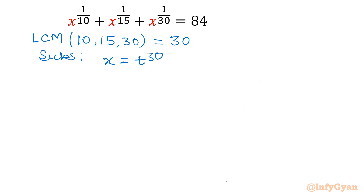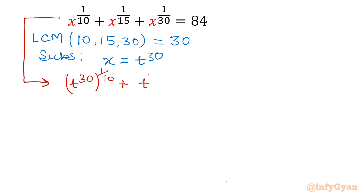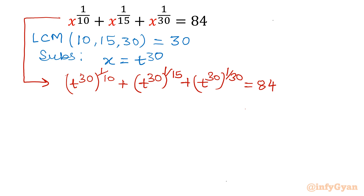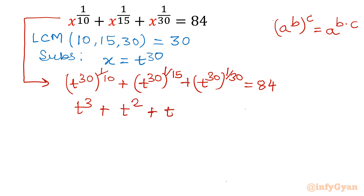Now substitute the value. I will write our equation as t power 30, whole power 1 over 10, plus t power 30, whole power 1 over 15, plus t power 30, whole power 1 over 30, equal to 84. Using the exponent property — a power b, whole power c equals a power b times c — taking the products gives us exponents 3, 2, and 1 respectively, so t cubed plus t squared plus t equals 84.